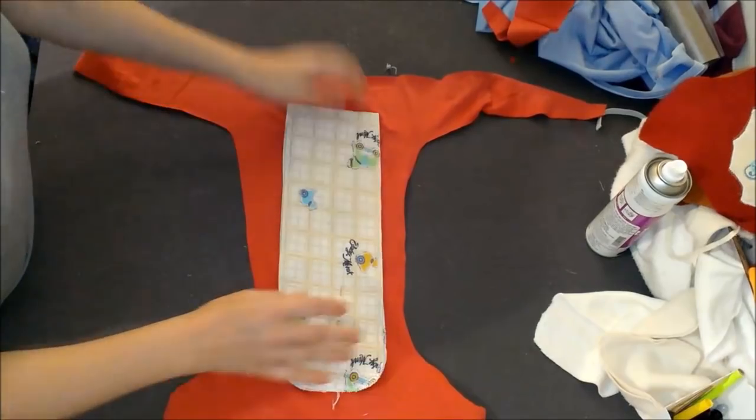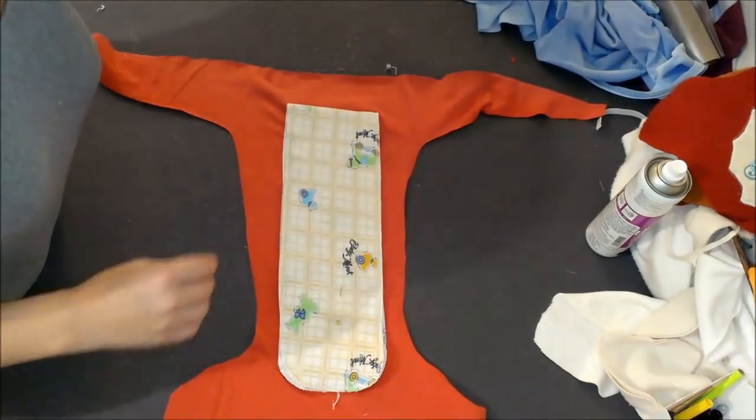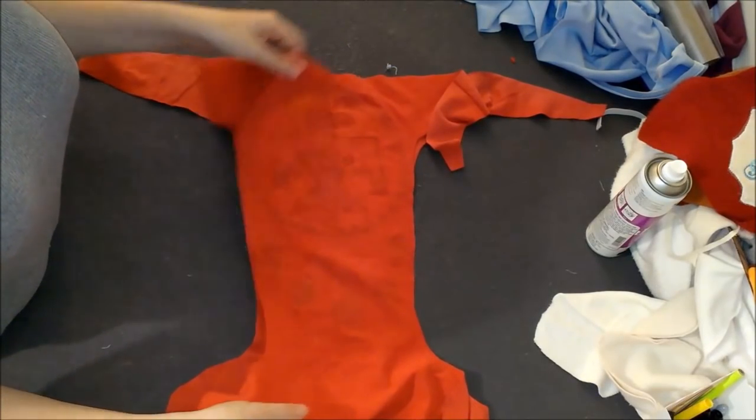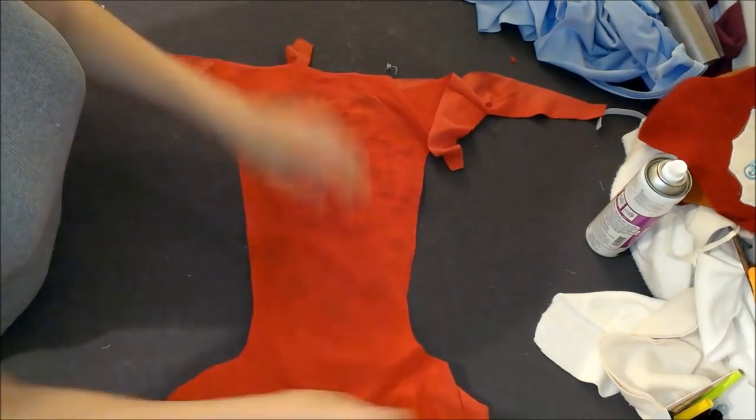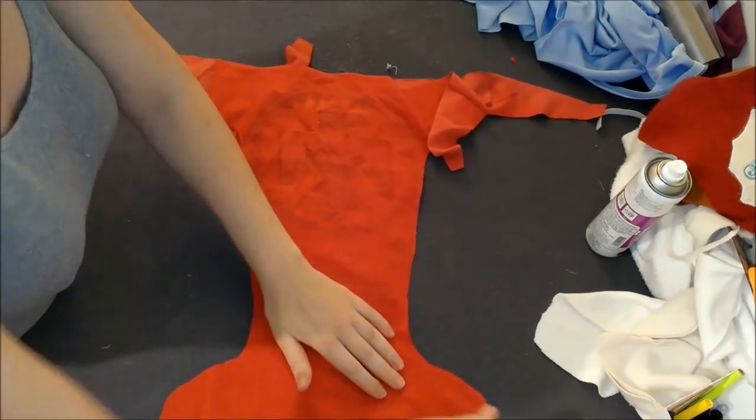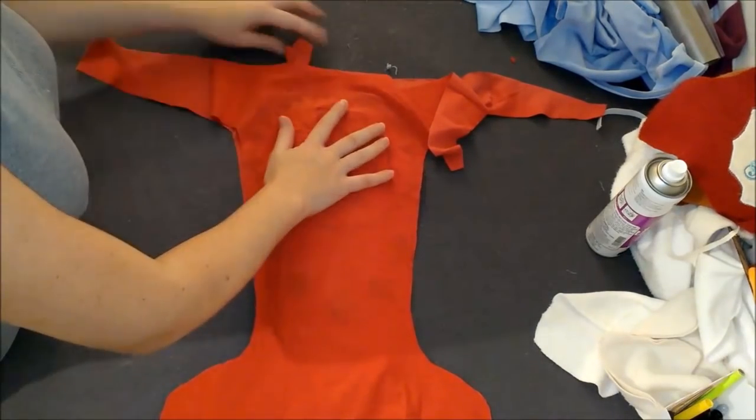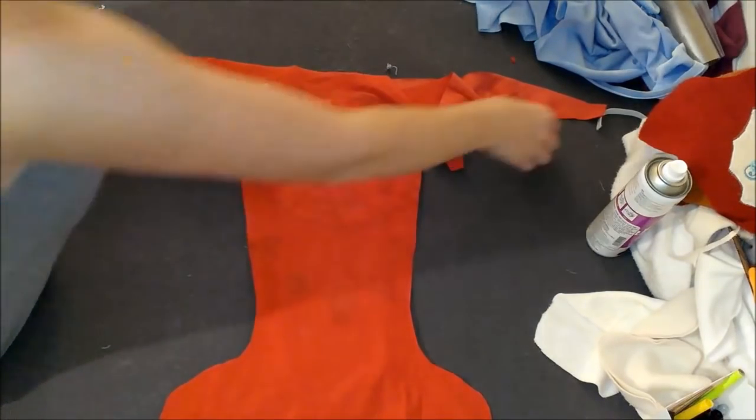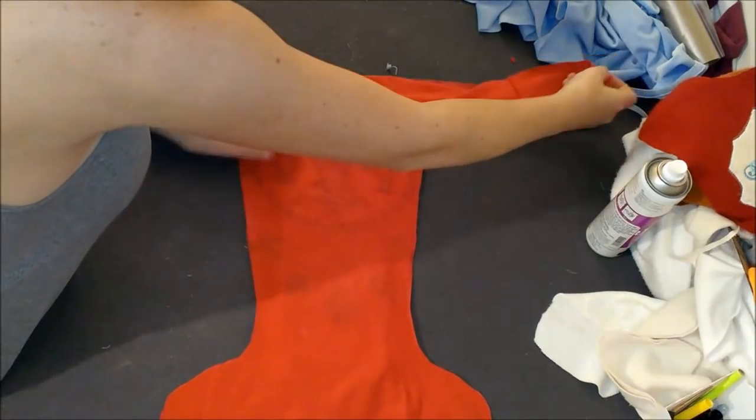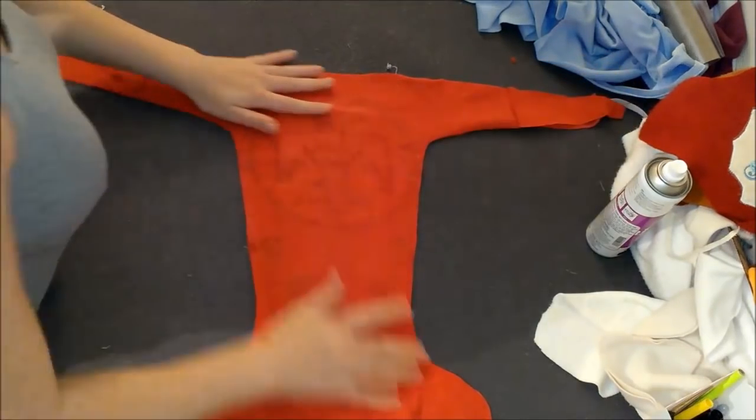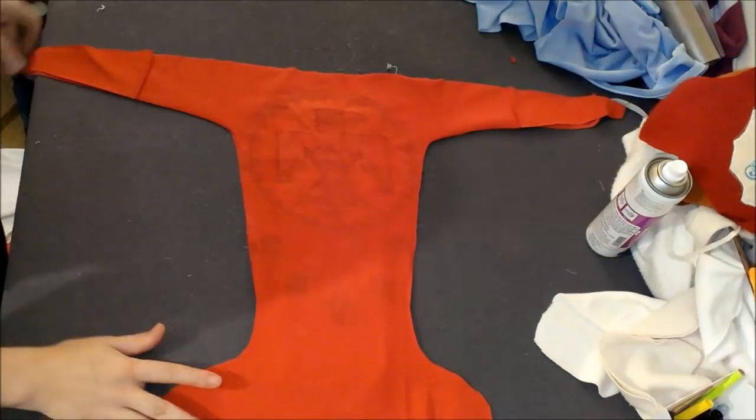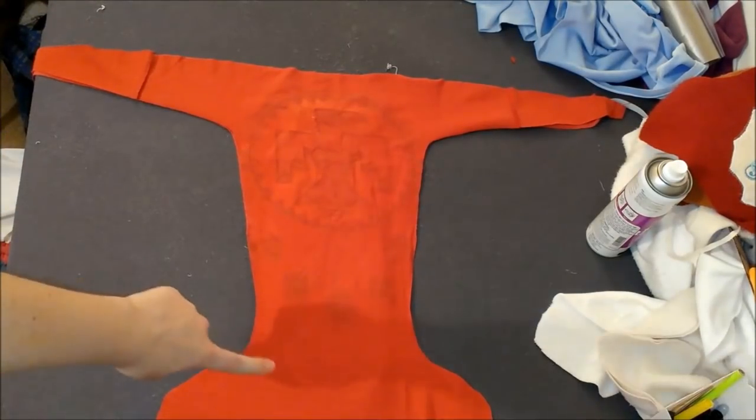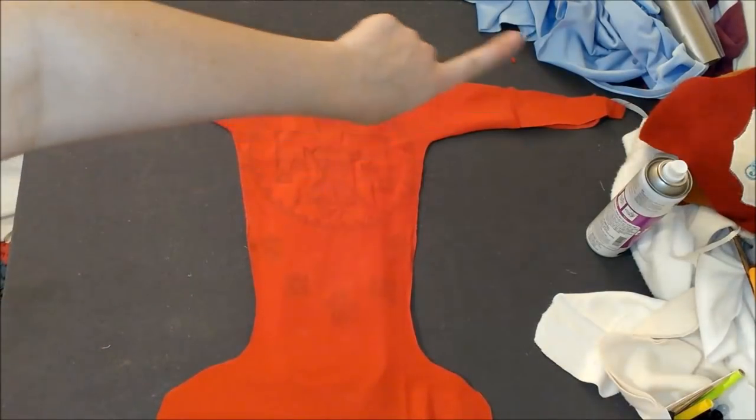So now I am taking the back part of the diaper, the outer part of the diaper, and I'm lining it up on top of the inner portion of the diaper. Once I get that all lined up, I'm going to go and sew all the way around the diaper.